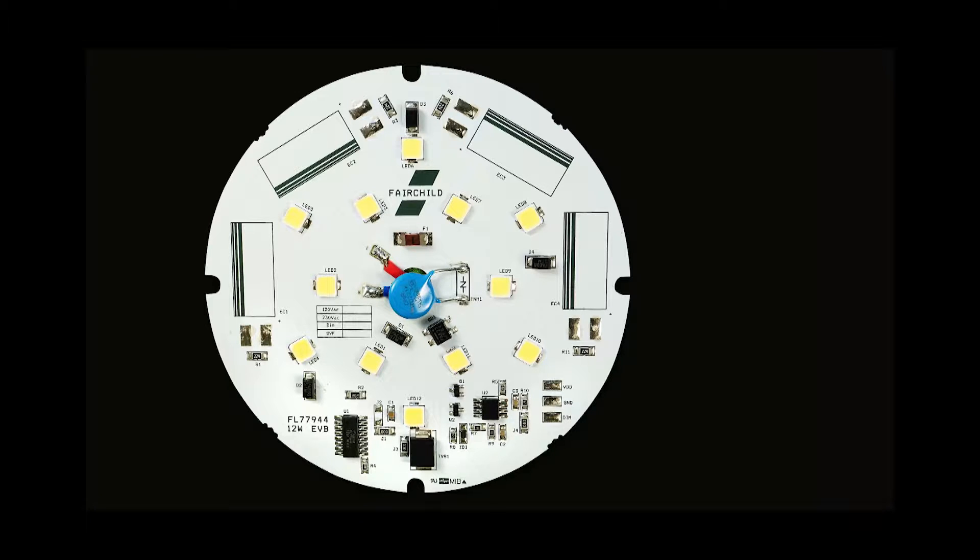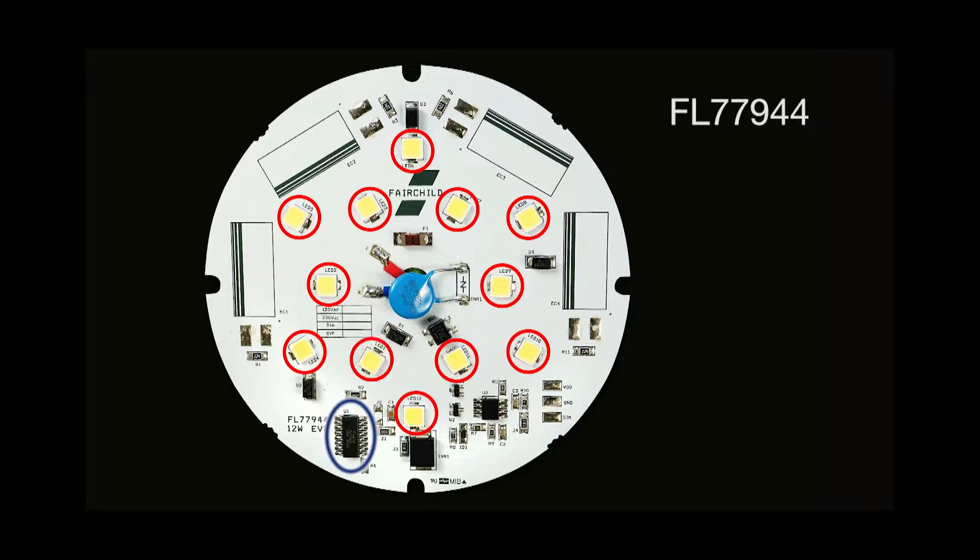Here's a 12W downlight reference design based on FL77944. The driver IC is located on the same PCB as the LED enabling a compact design. As you can see here, there are no electrolytic capacitors.